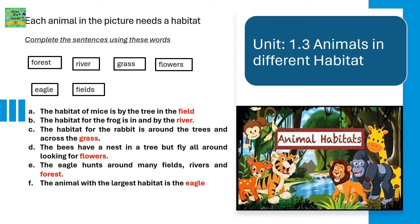Unit 1.3 Animals in different habitats. Each animal in the picture needs a habitat. Complete the sentences using these words: forest, river, grass, flowers, eagle, and fields. The habitat of a mouse is by the tree in the field. The habitat for the frog is in and by the river. The habitat for the rabbit is around the trees and across the grass. The bees have a nest in a tree and fly all around looking for flowers. The eagle hunts around many fields, rivers, and forests. The animal with the largest habitat is the eagle.